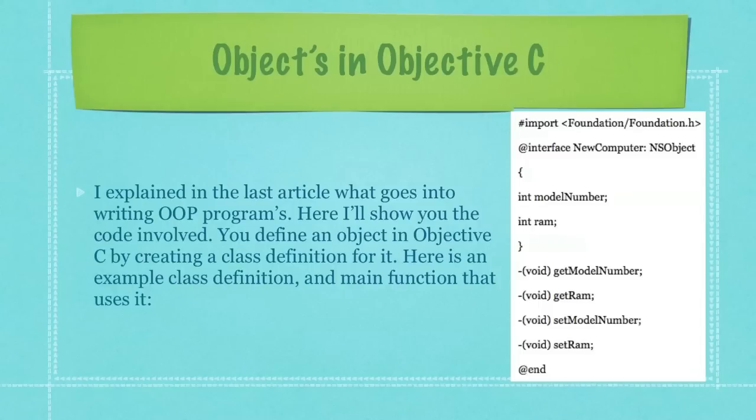You define an object in Objective-C by creating a class definition for it. Here is an example class definition on the right and main function that uses it.